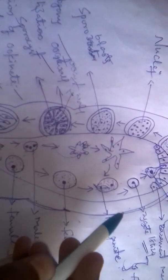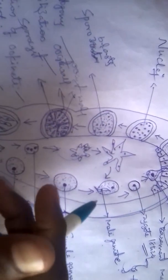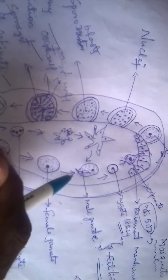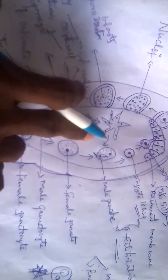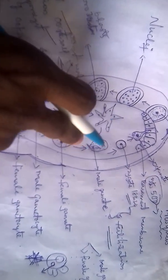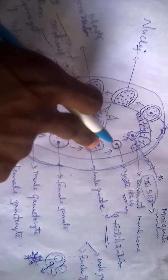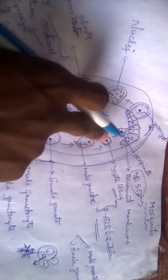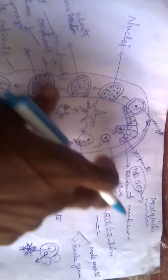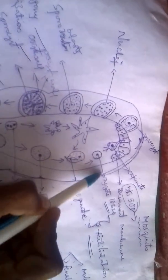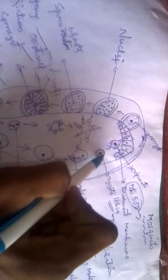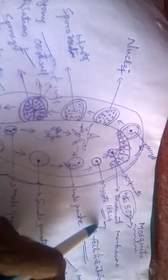Next, we discuss fertilization. Fertilization is the fusion of the male gamete and female gamete to give rise to the zygote. Here, the male gamete and female gamete fuse with each other and give rise to the zygote. This zygote remains inactive for exactly 18 to 24 hours.